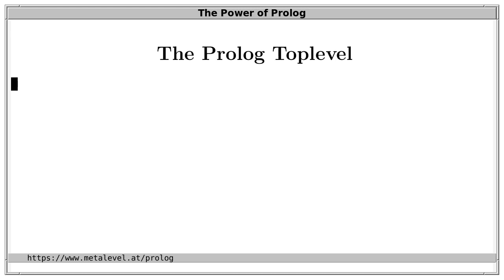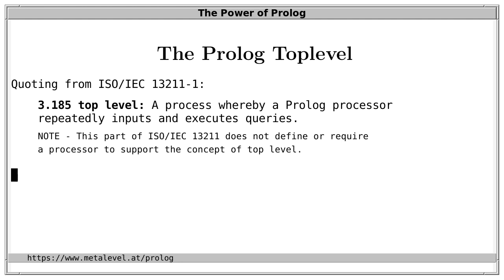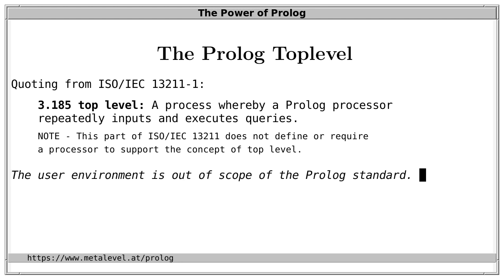The top level is how we interact with a Prolog system. The Prolog standard defines what a top level is: a process where a Prolog processor repeatedly inputs and executes queries. However, it also states in a note that it doesn't define or require a processor to support the concept of a top level. So a conforming Prolog system may or may not have a top level.